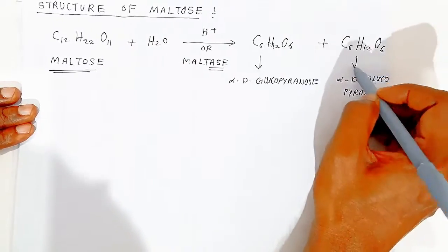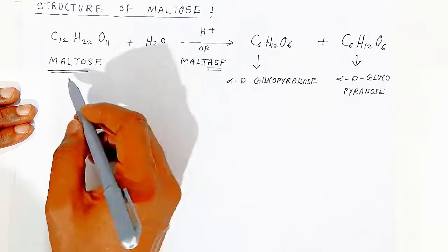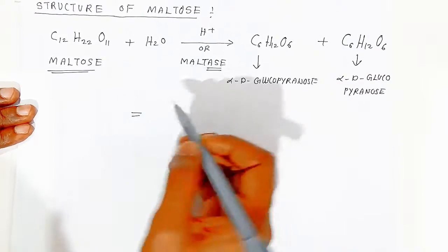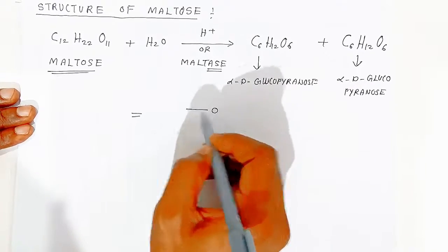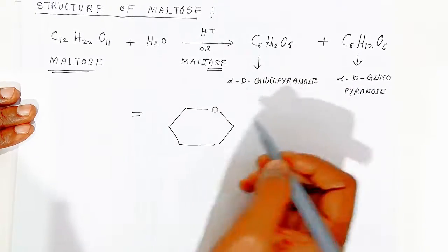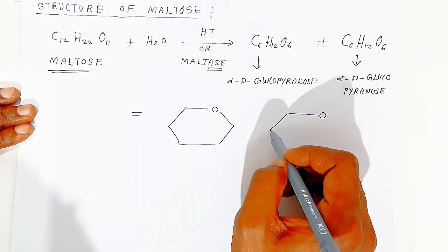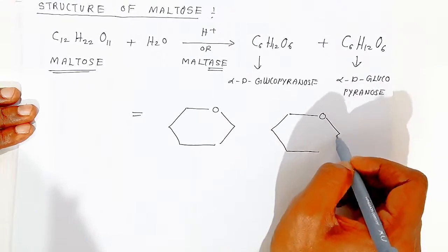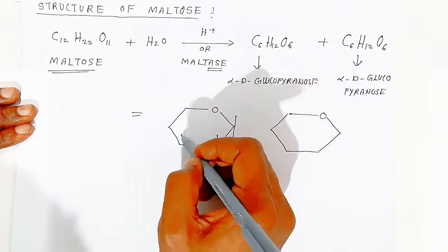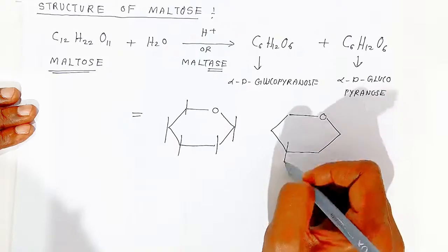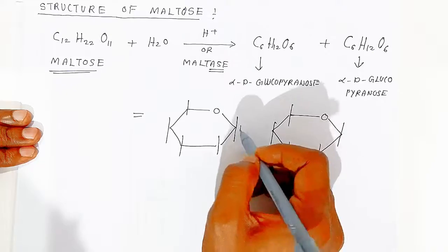To draw the structure of maltose, take two alpha-D-glucopyranose units. Draw two pyranose rings. Because carbon is tetravalent, draw the tetravalency at each carbon in both rings.